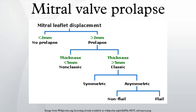Symmetric versus asymmetric: classical prolapse may be subdivided into symmetric and asymmetric, referring to the point at which leaflet tips join the mitral annulus. In symmetric coaptation, leaflet tips meet at a common point on the annulus. Asymmetric coaptation is marked by one leaflet displaced toward the atrium with respect to the other. Patients with asymmetric prolapse are susceptible to severe deterioration of the mitral valve, with possible rupture of the chordae tendineae and the development of a flail leaflet.